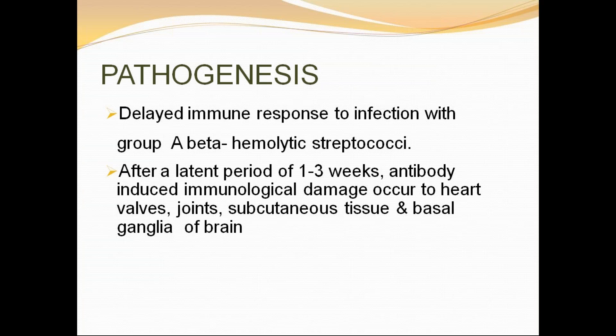Almost all the major criteria fit this mechanism: carditis, arthritis, subcutaneous nodules, erythema marginatum, and chorea. In this way, you can retrospectively write the pathogenesis, or summarize the major criteria depending on which system is involved. Pharyngitis produced by group A beta-hemolytic streptococcus can lead to acute rheumatic fever, rheumatic heart disease, and post-streptococcal glomerulonephritis. Skin infection by this organism leads to glomerulonephritis only — not rheumatic fever or carditis.